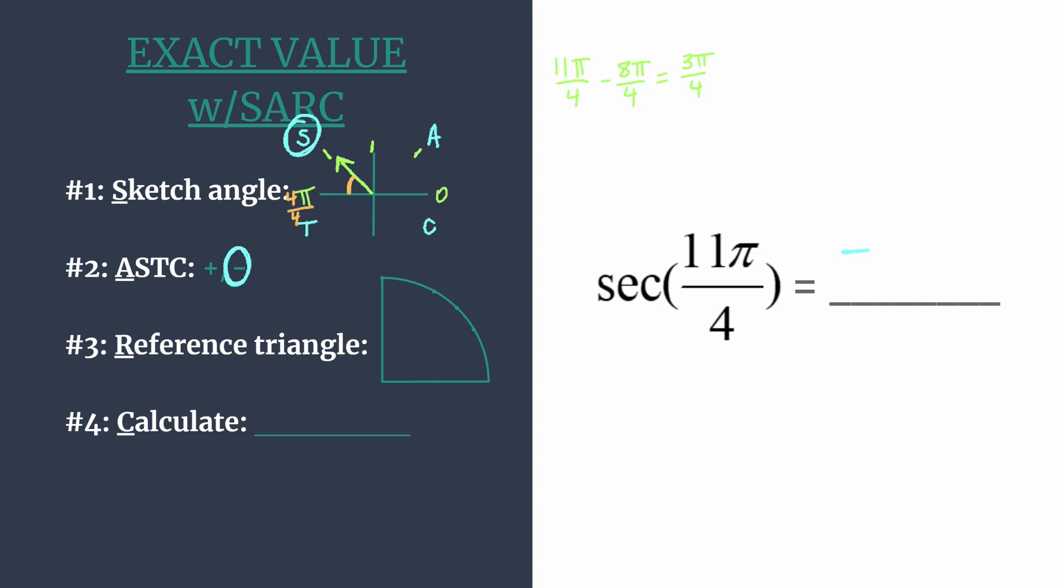So π over 4 is equivalent to 45 degrees. We're going to be getting our coordinates from the 45, 45, 90 special right triangle. Here's the 45, 45, 90 special right triangle. And the coordinates that go with that are √2 over 2, √2 over 2. That's using your special right triangle knowledge.